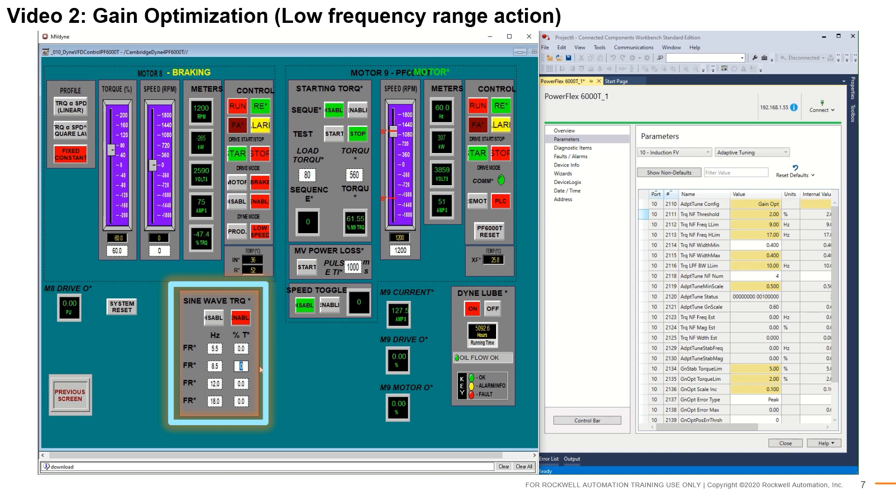Now let's toggle the sine wave injection on and off and observe the gain scalar. It is observed that in the absence of low frequency components, adaptive tuning up-tunes the gain. In the presence of low frequency components, adaptive tuning detunes the gain. This persistent auto-optimization allows the control loop to always operate at the optimal gain setting.